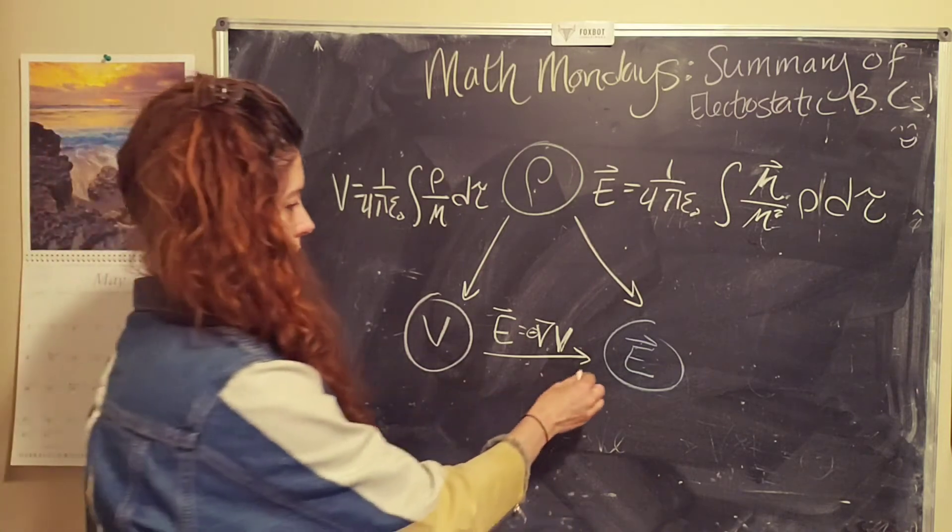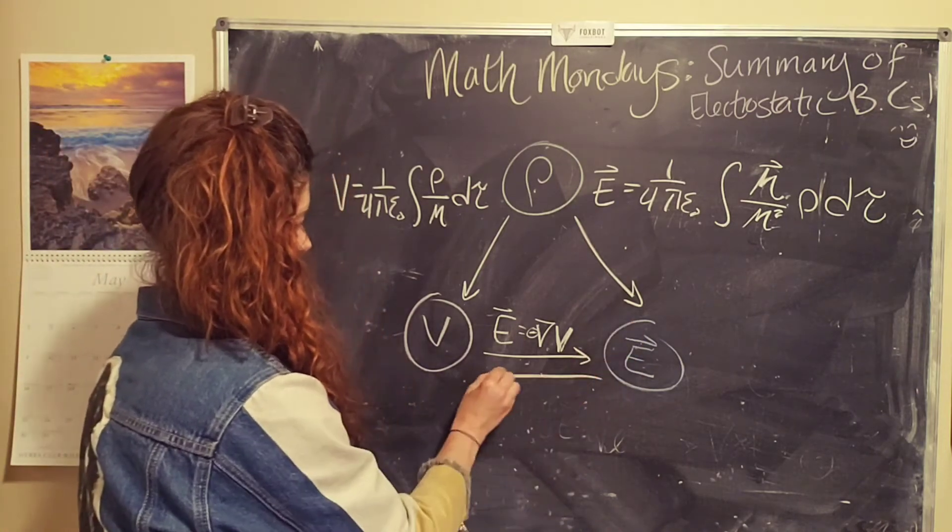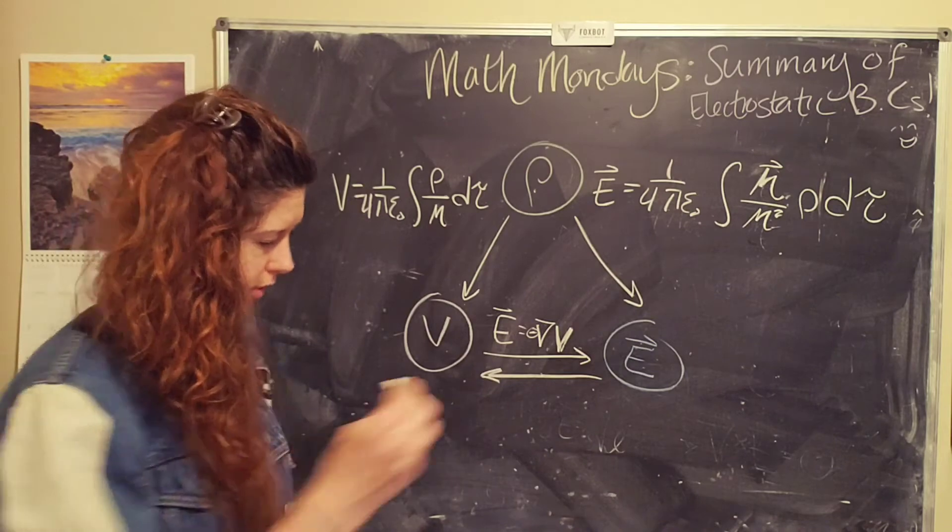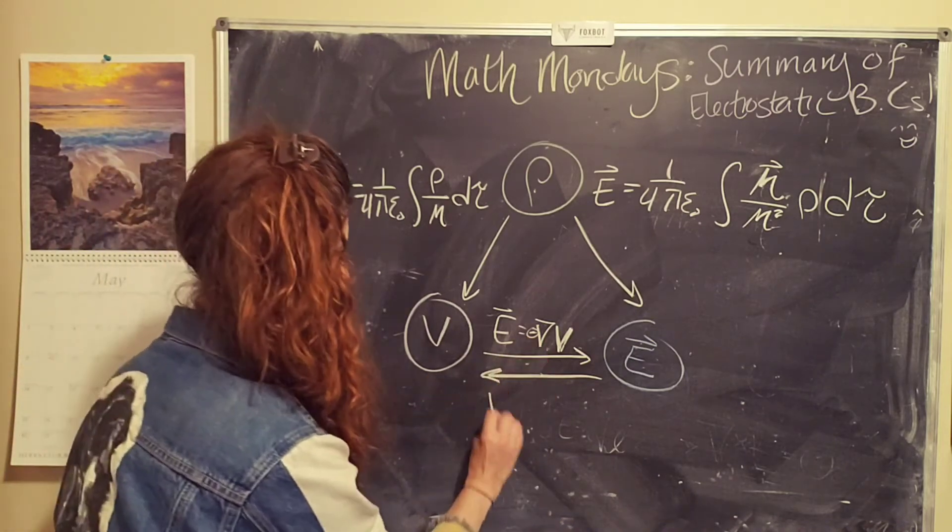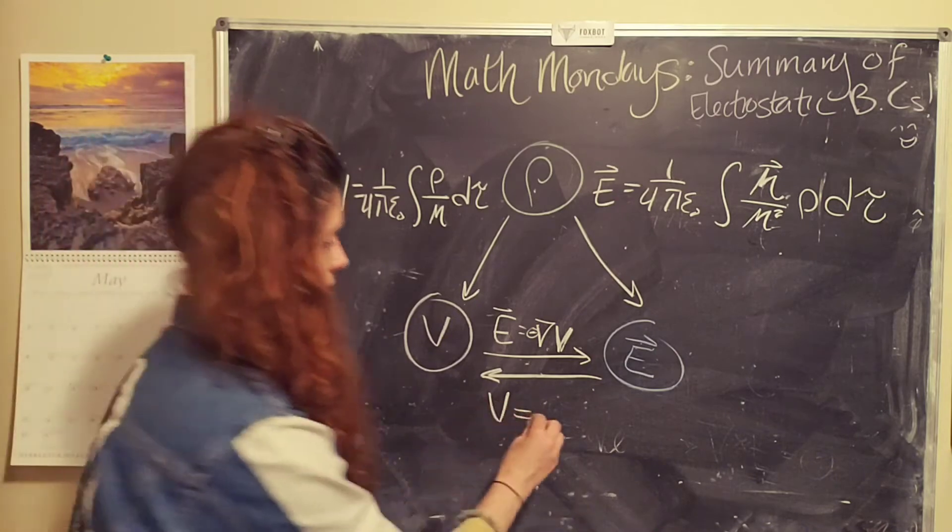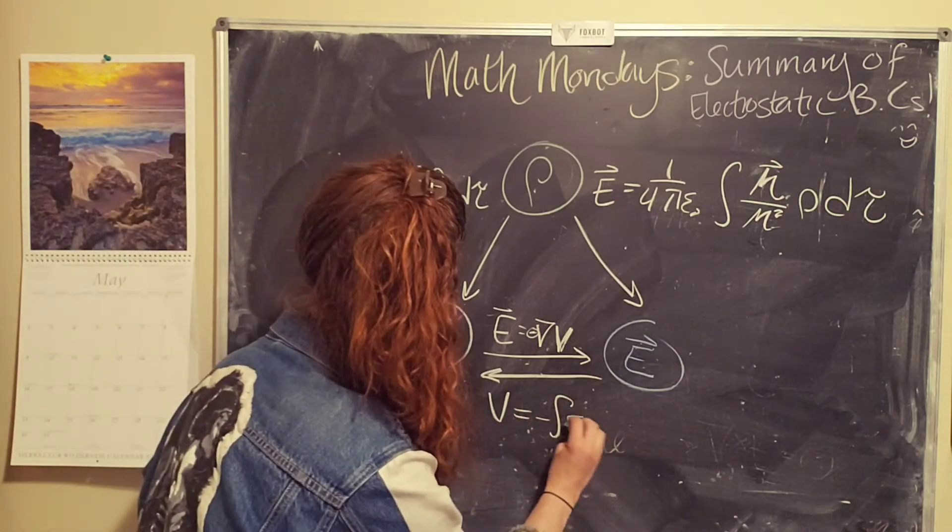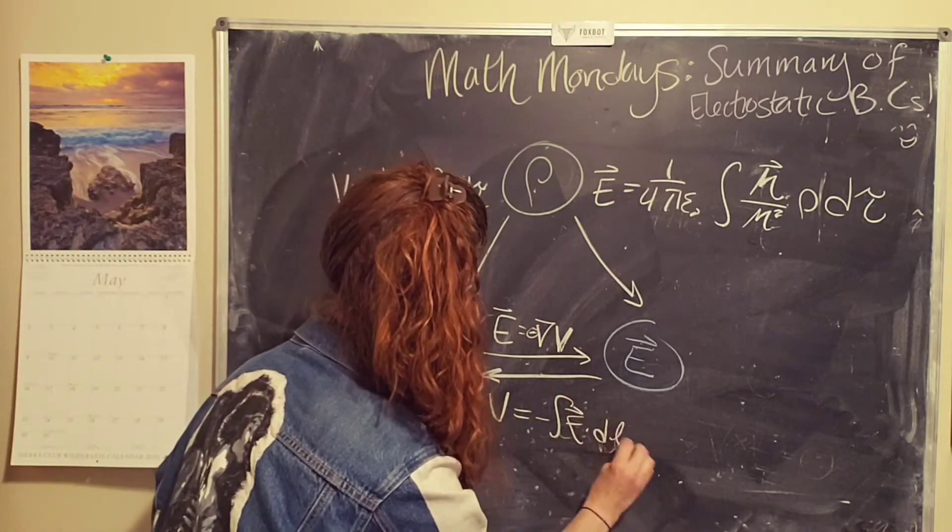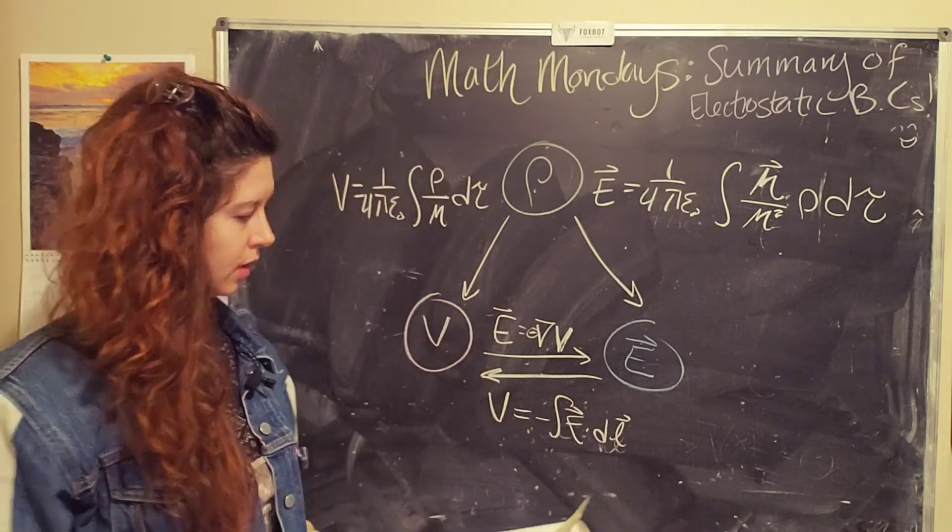You also can go from the electric field to calculate the electric potential if you need to by kind of just flipping it and reversing it. So the potential equals the negative line integral of the electric field.